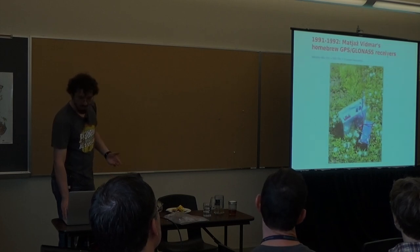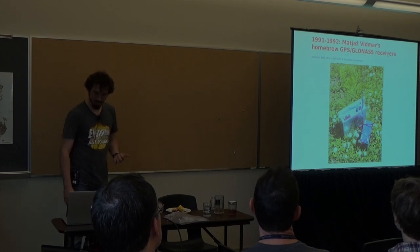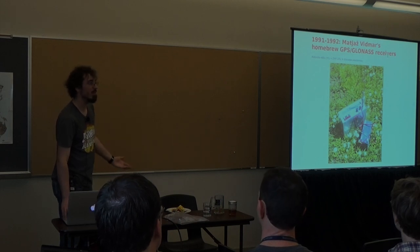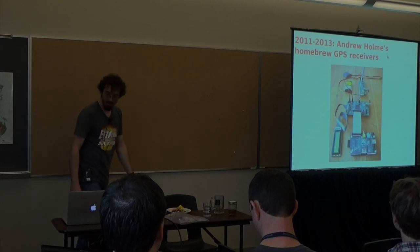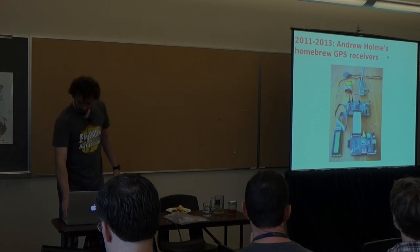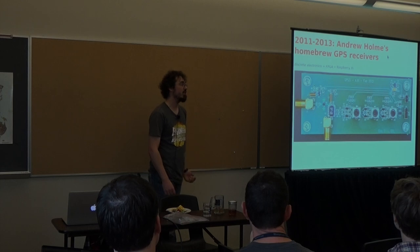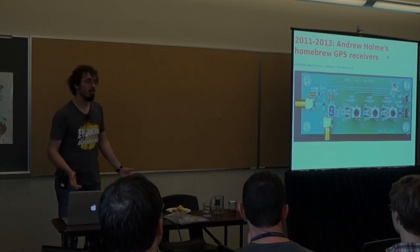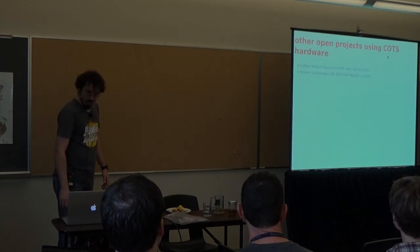He was using Motorola 68K CPUs and digital signal processors and custom discrete electronics. This is hobbyist level stuff in 1991, right? 20 years later, there's Andrew Holmes, homebrewed GPS receiver. And he was doing this stuff with, again, he had some custom discrete electronics and he used an FPGA and a Raspberry Pi. So, absolutely within the realm of stuff that hobbyists can do today.